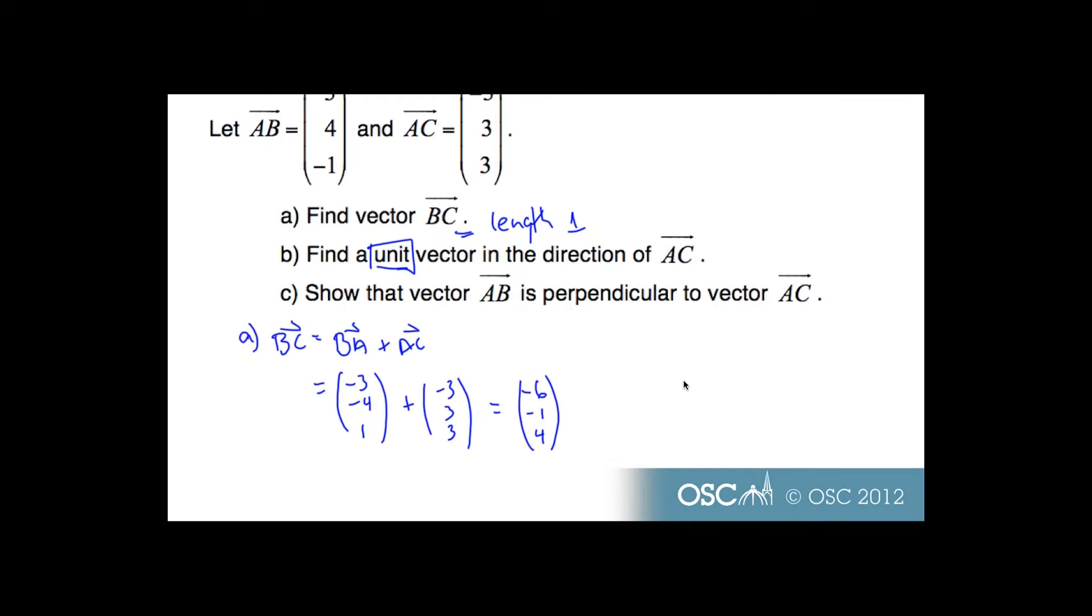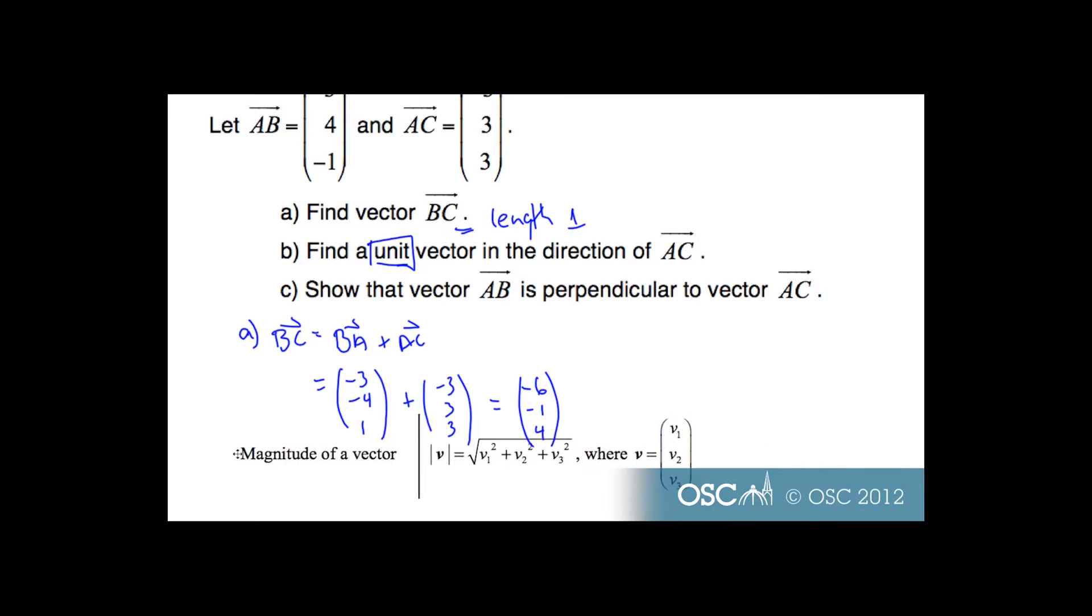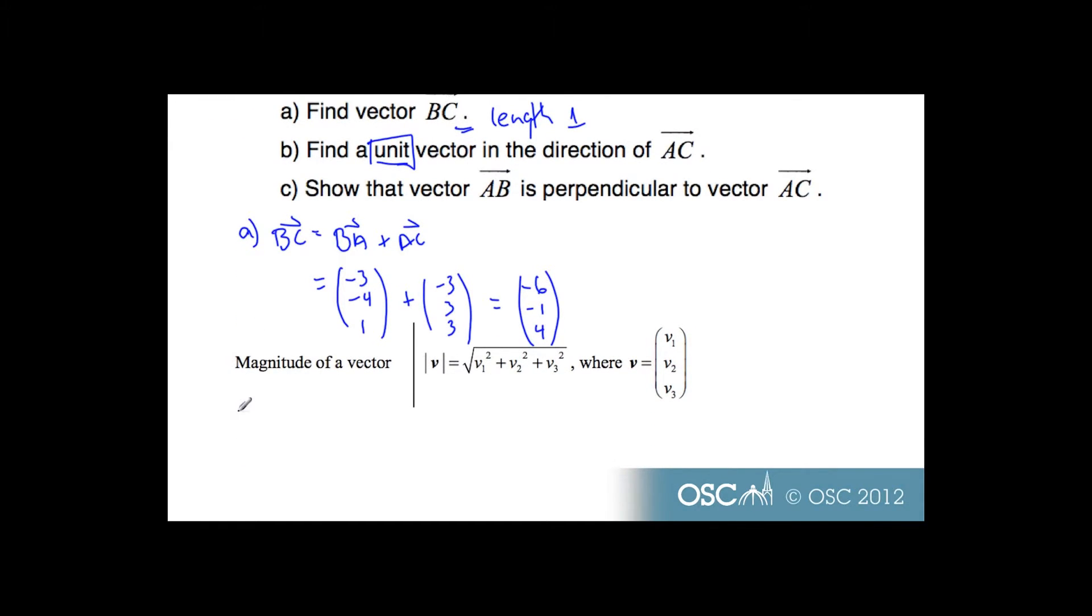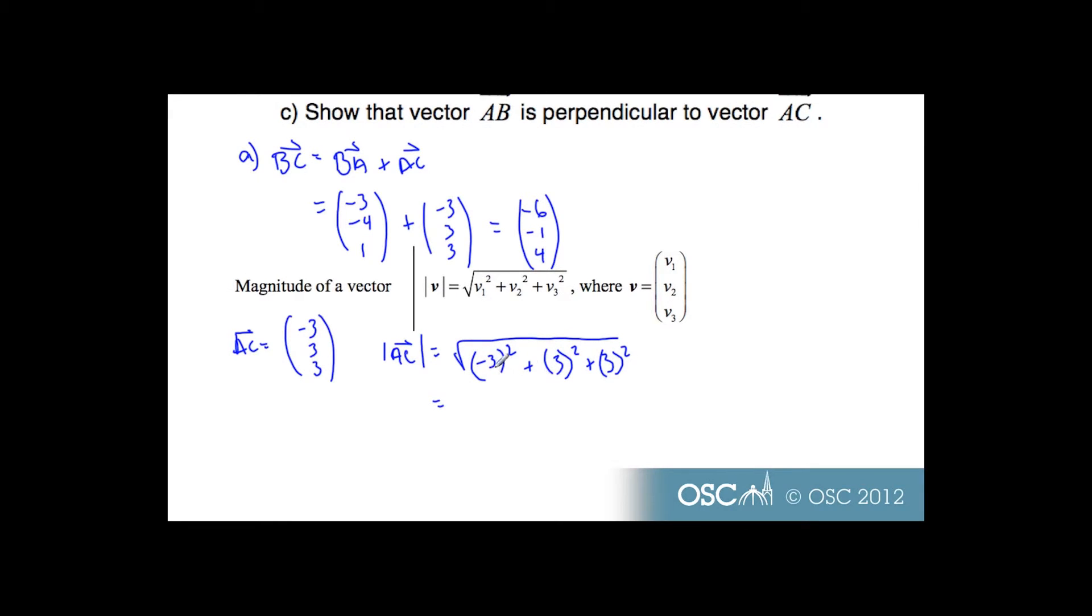If I look at my formula booklet, I know that I have a formula for magnitude. If I take AC, I'm told it's (-3, 3, 3), and I wish to find the magnitude of AC. So magnitude of AC is equal to square root of the first value squared, (-3)² plus 3² plus 3². Doing this, I get 9 plus 9 plus 9, I get the square root of 27.